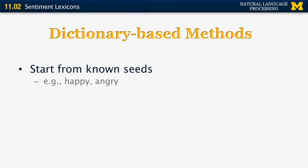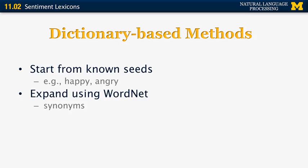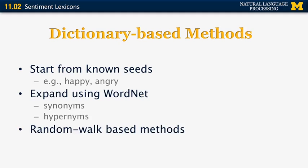Now let's look at some automatic methods, starting with dictionary-based methods. The goal is to identify additional content words as either positive or negative. These methods work by starting from a set of known seed words — for example, happy as a positive word and angry as a negative word — and then expanding each set using WordNet. Synonyms of happy are added to the positive set, synonyms of angry to the negative set, and the same is done for hypernyms and hyponyms.